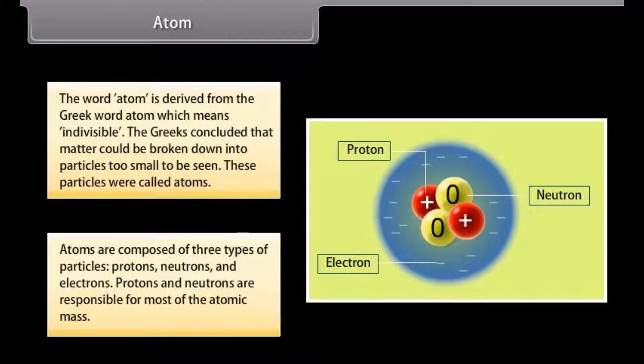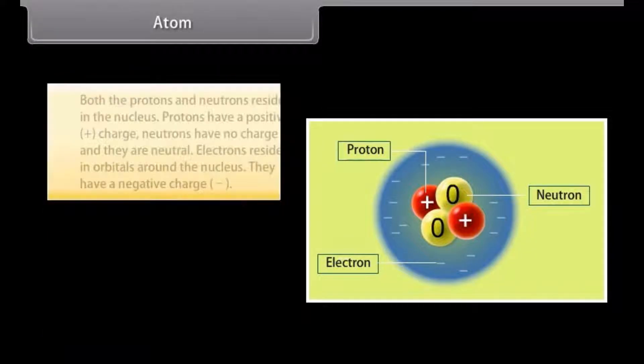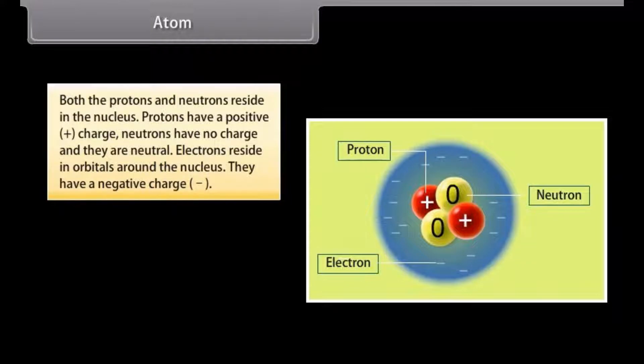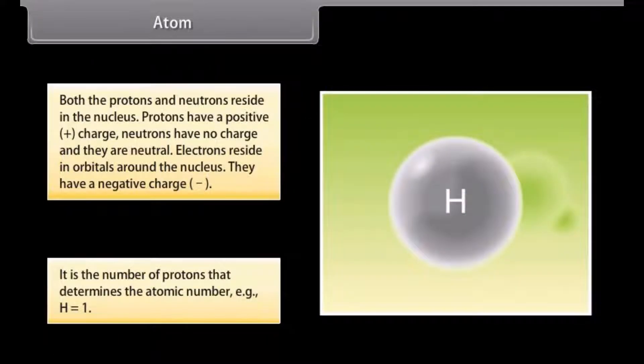Atoms are composed of three types of particles: protons, neutrons and electrons. Protons and neutrons are responsible for most of the atomic mass. Both the protons and neutrons reside in the nucleus. Protons have a positive charge. Neutrons have no charge and they are neutral. Electrons reside in orbitals around the nucleus. They have a negative charge. It is the number of protons that determines the atomic number, that is, H is equal to 1.